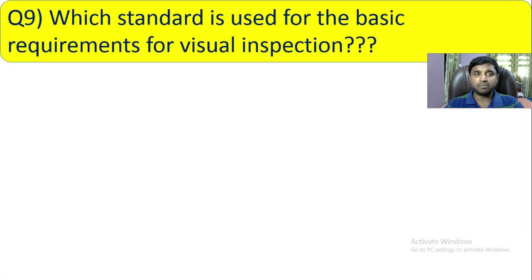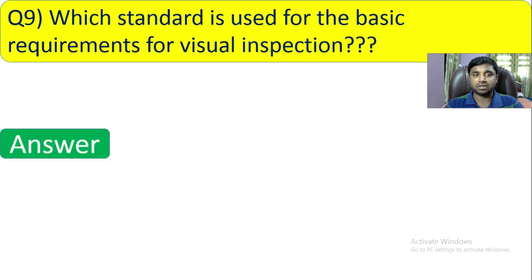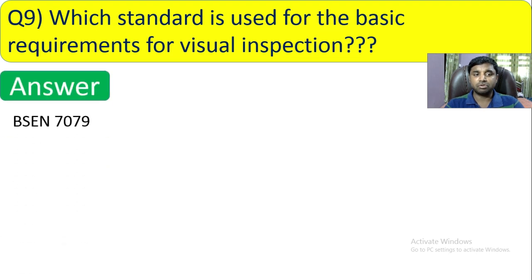Question number 9: Which standard is used for the basic requirements for visual inspection? The answer is BSEN 7079, which is the standard used for the basic requirements for visual inspection.